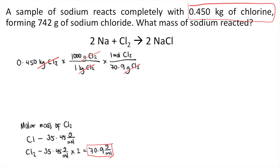The problem is asking for sodium, so we need to convert moles of Cl2 into moles of sodium. We do that using the balanced chemical reaction. According to the balanced reaction, for every one mole of Cl2 there are two moles of sodium. So the moles of Cl2 cancel out, and now you have moles of sodium.